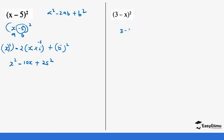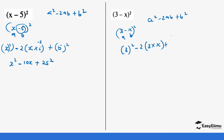Let's do another one. We have (3 - x)², so a is 3 and b is x. We put it in the form a² - 2ab + b²: that is 3² minus 2 times 3 times x plus x². So it becomes 9 minus 6x plus x². That is our expression.